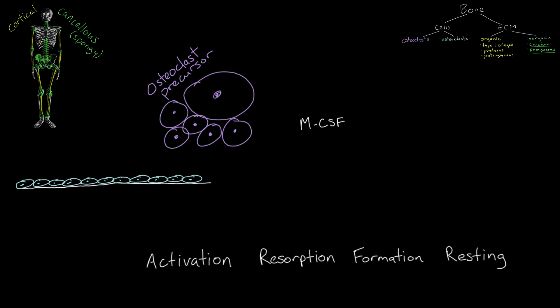MCSF is required to induce clonal expansion of the number of macrophages. Secondly, the precursors display RANK, or Receptor Activator of Nuclear Factor Kappa B. Mesenchymal stromal cells and osteoblasts can activate the precursor cell to differentiate by binding its RANK ligand, noted here as RANK-L.